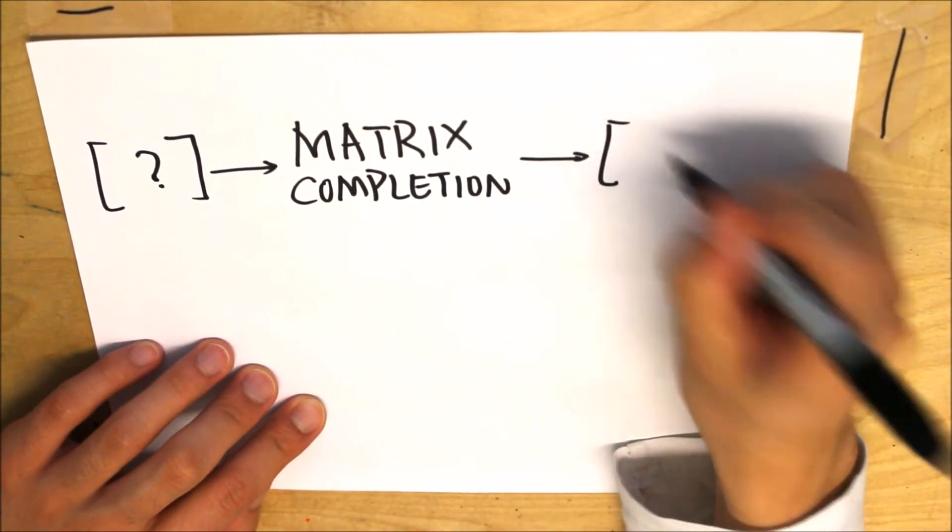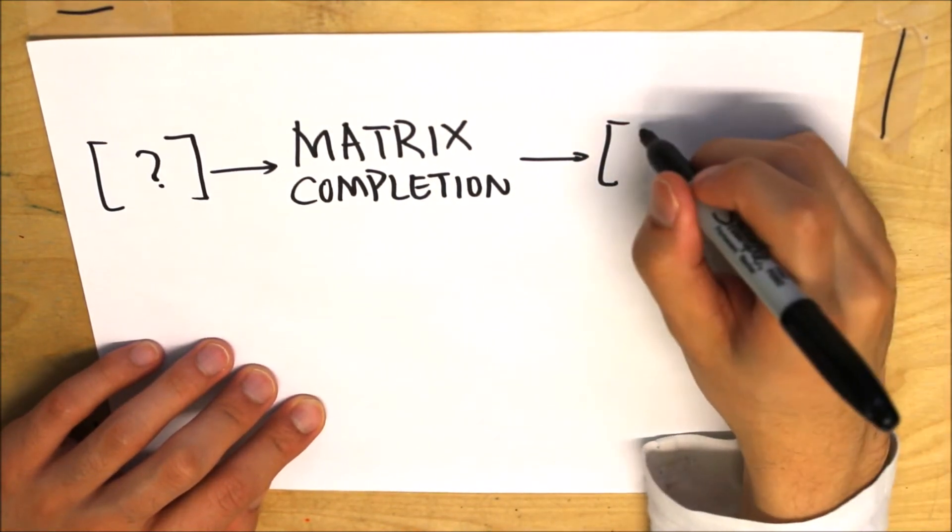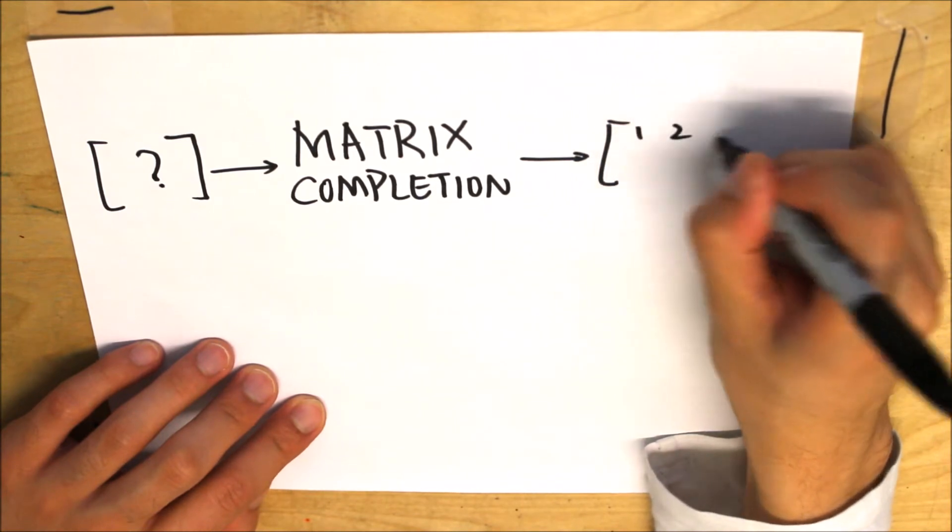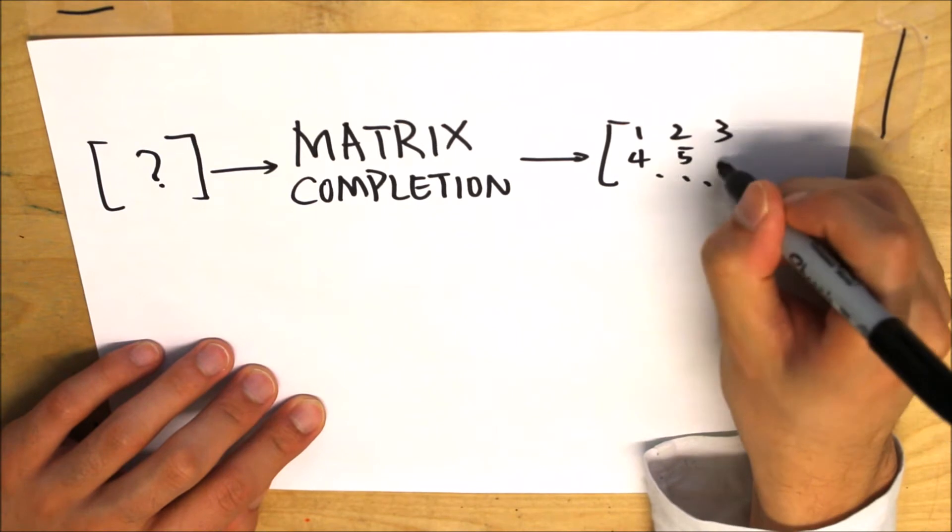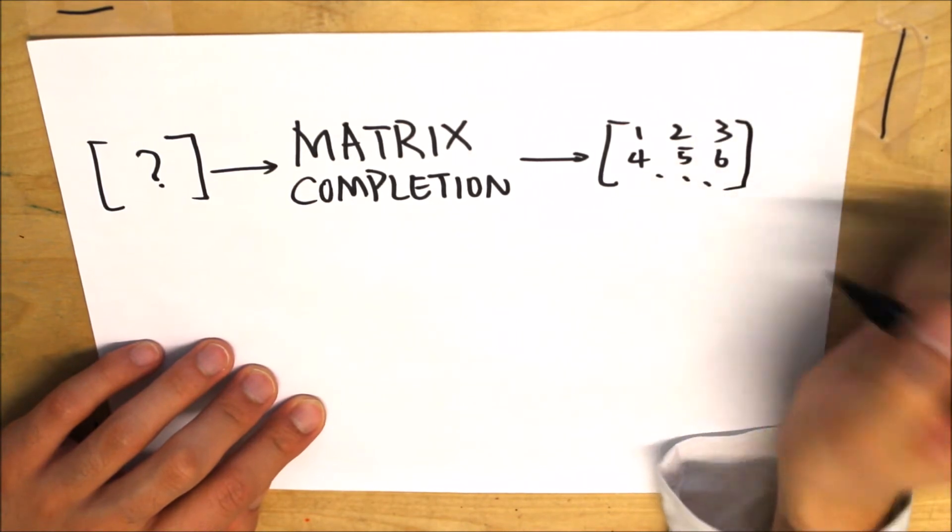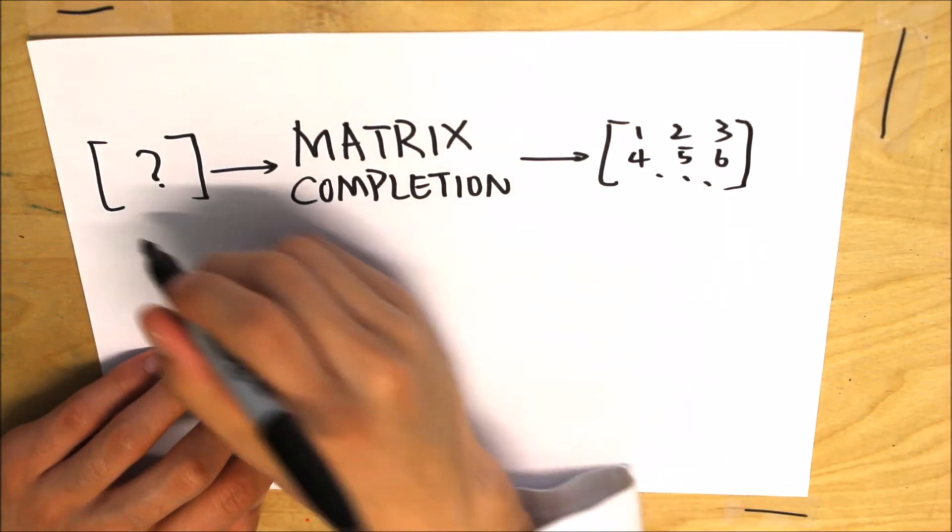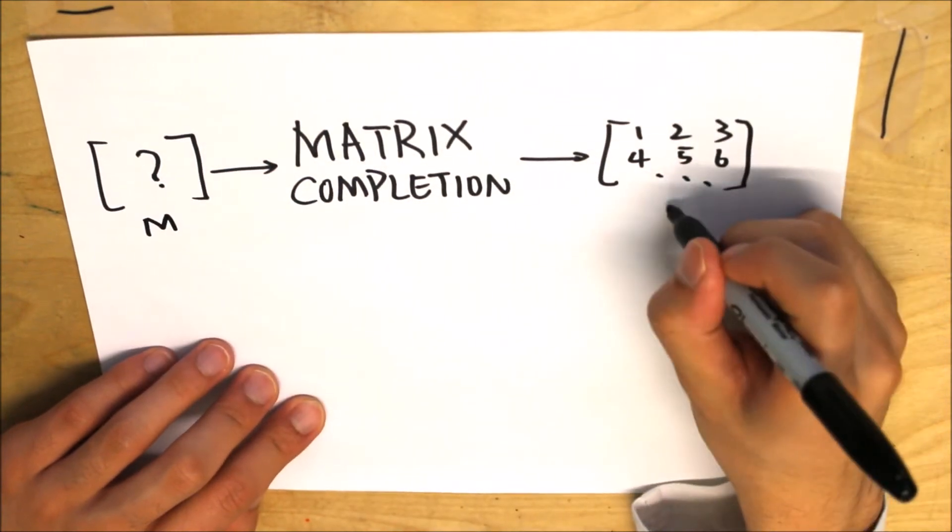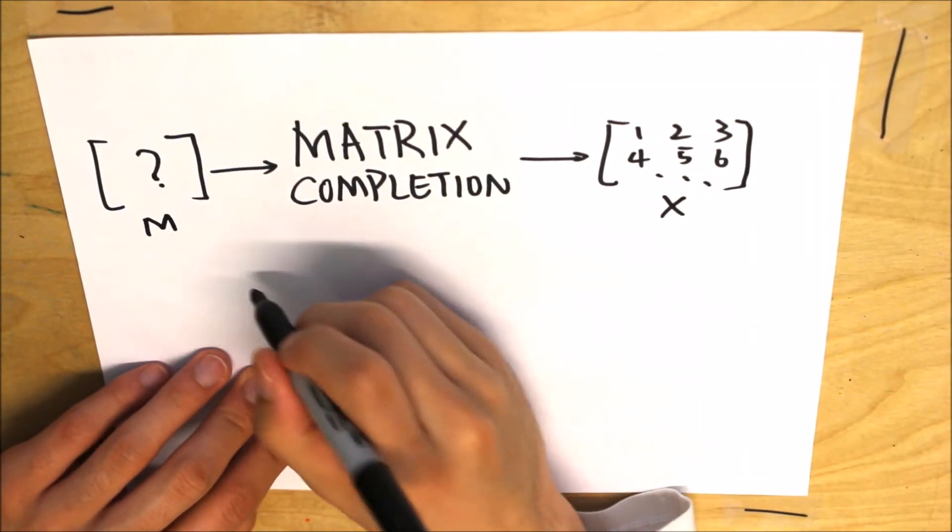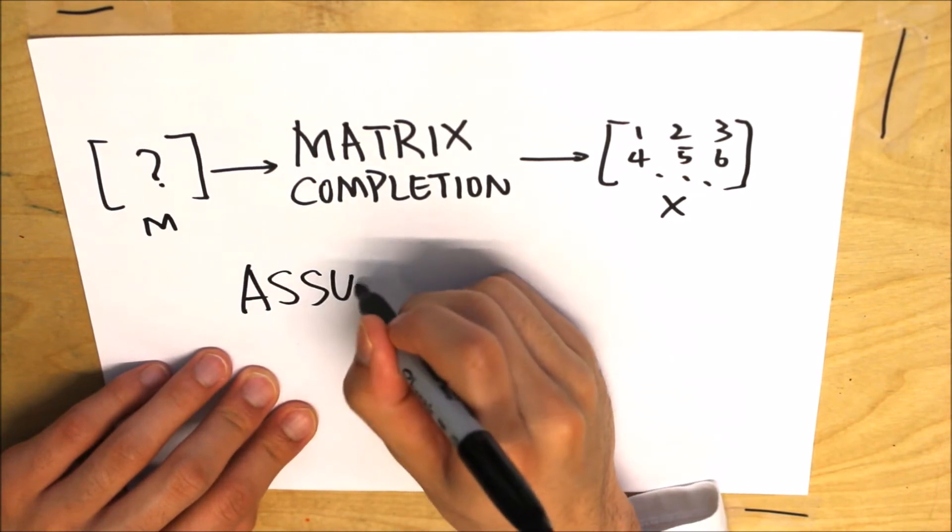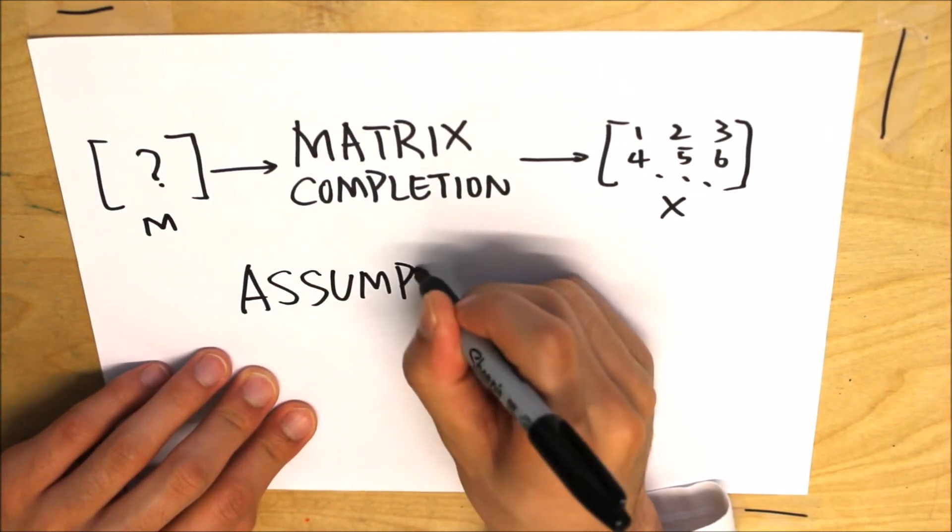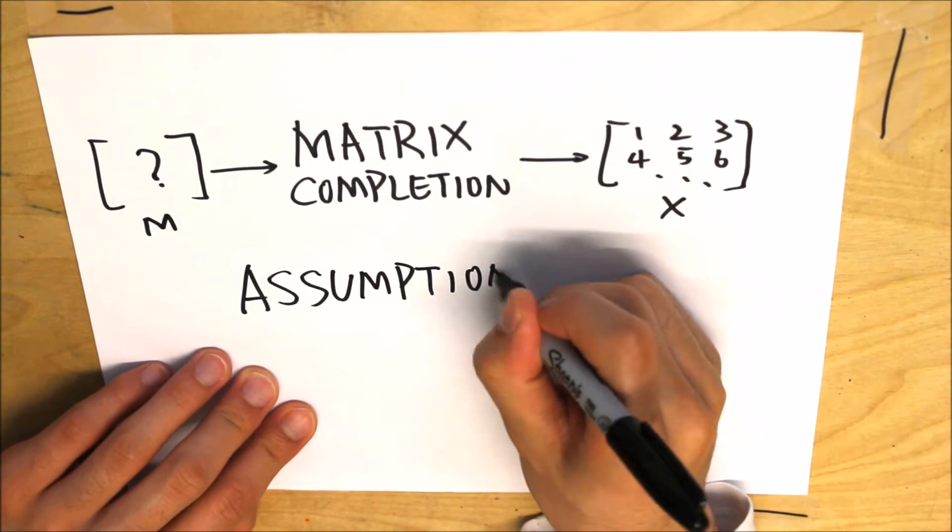In order to recover a matrix that actually represents the trends and features implicitly present in the original matrix, it is crucial that we set some conditions and assumptions on the original matrix. Some of the assumptions include that the matrix has to be low rank, and at least one entry from each column and row should be observed, and the matrix should be incoherent.